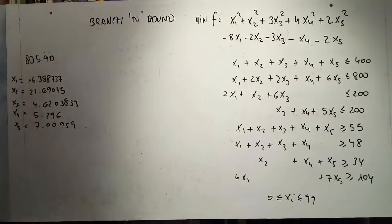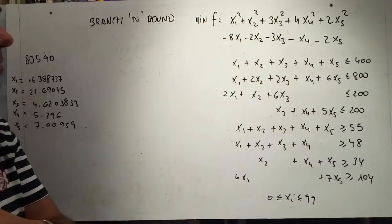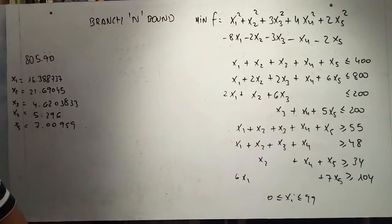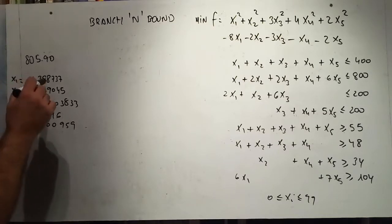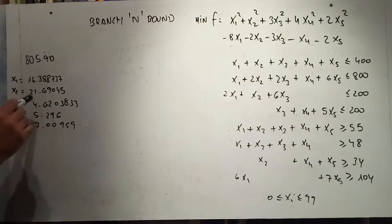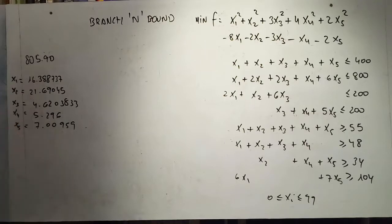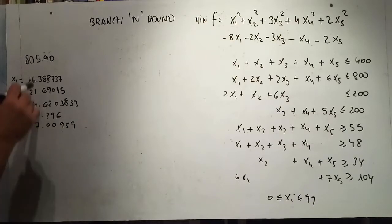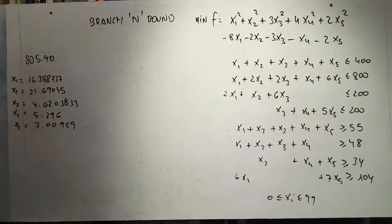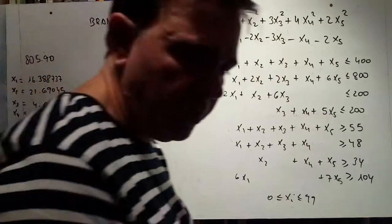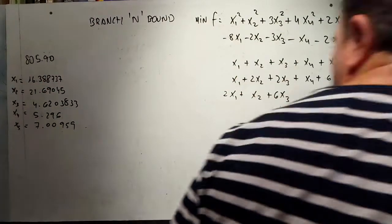I have just done the first iteration here using the gradient projection or sequential quadratic feasible directions programs we have been developing. The continuous relaxed solution is: x1 = 16.388, x2 = 21.69, x3 = 4.625, x4 = 5.294, x5 ≈ 7.0095, and the objective function value is 105.90.